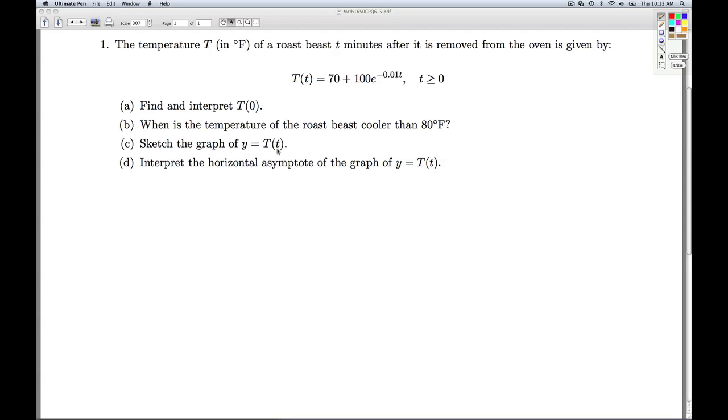Okay, in part c we're asked to sketch the graph of this function, y equals T of t, and then in part d we're asked to interpret the horizontal asymptote, so these kind of go hand in hand. And so how would you go about graphing this function?